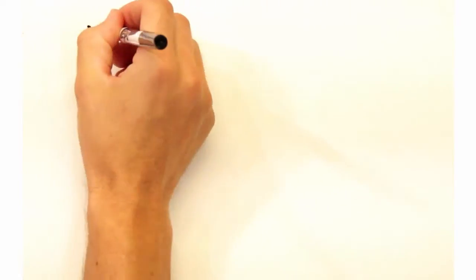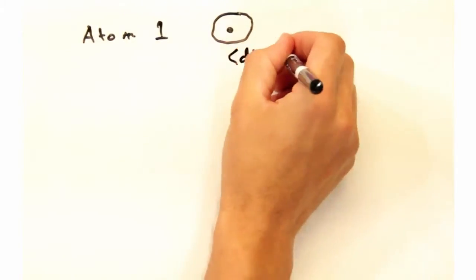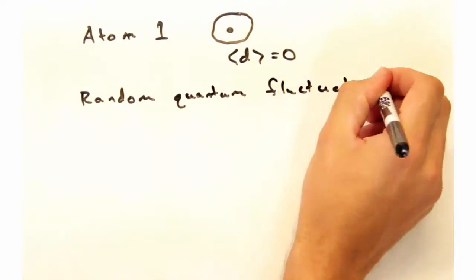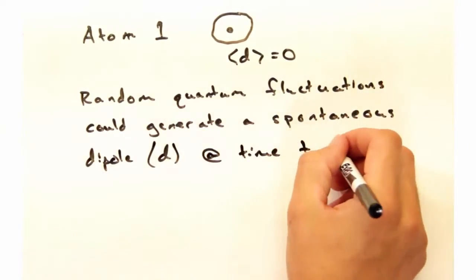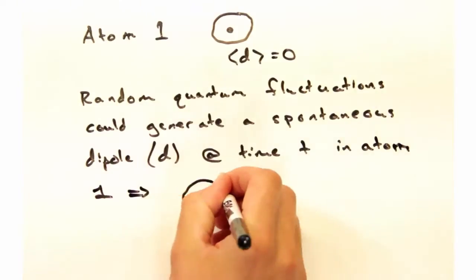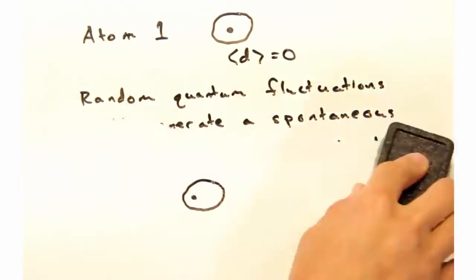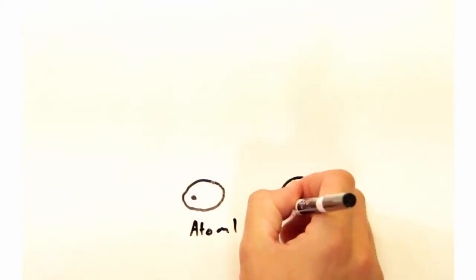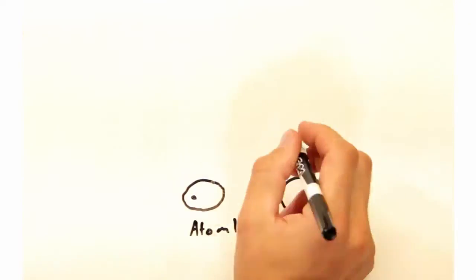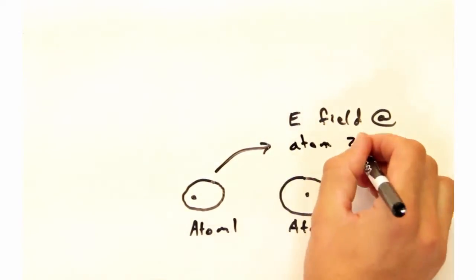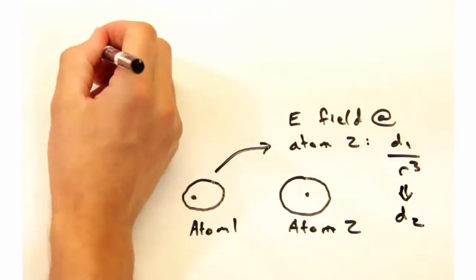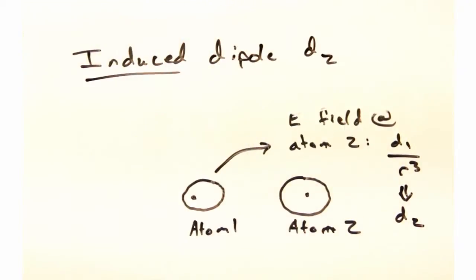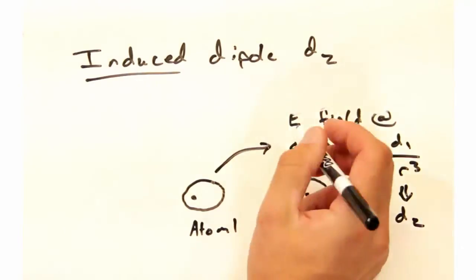Well, you're right in the sense that they don't have dipoles, but it's their time average dipoles that are zero. So then random quantum fluctuations could generate a spontaneous dipole at some time t? Correct. Then that dipole could generate an electric field, which would be proportional to the first atom's dipole over the distance between the two atoms cubed. Our second atom would then feel this electric field, and a dipole proportional to that E field would be induced.